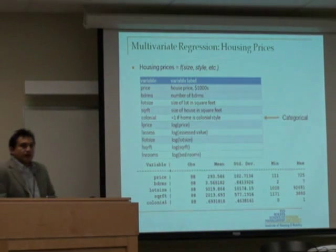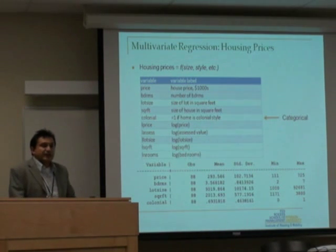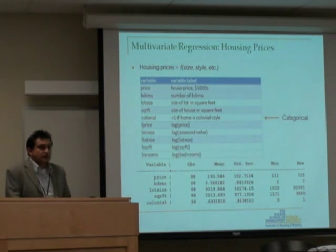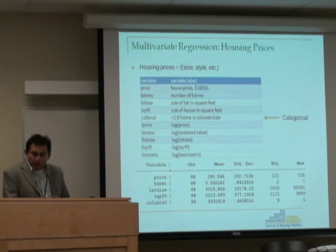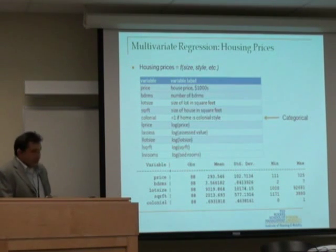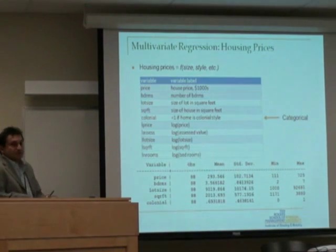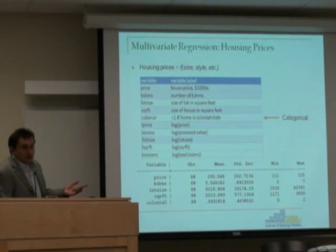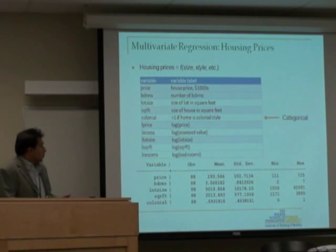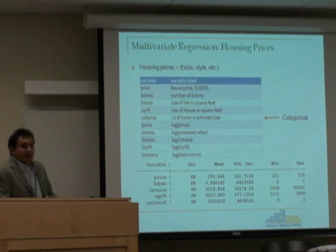This model is explaining the variation in housing prices as a function of certain explanatory variables. The dataset includes the price of a house in thousands — so 65 means $65,000 — along with the number of bedrooms, the average lot size, square footage, the square footage of the total house, and the square footage of the total lot.